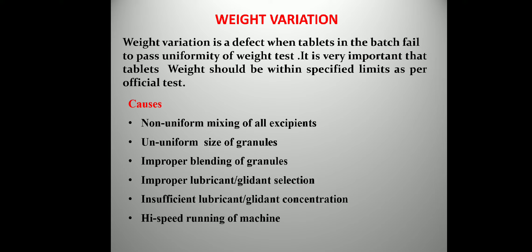The first defect is weight variation. Weight variation is a defect when tablets in a batch fail to pass the uniformity of weight test. It is very important that tablet weight should be within the specified limit as per the official test. Tablet weight is an indicator of drug content or content uniformity — if the weight is uniform, the tablet contents and drug content are considered uniform, indicating good quality.